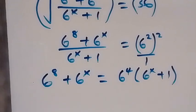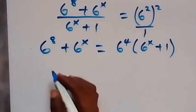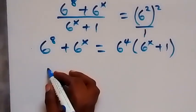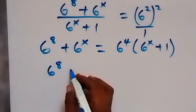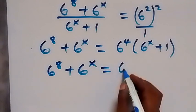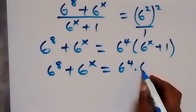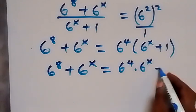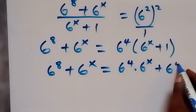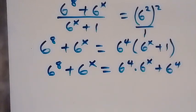Then from here we can open this bracket, and this gives us 6 raised to power 8 plus 6 raised to power x, equals 6 raised to power 4 times 6 raised to power x, plus 6 raised to power 4 times 1, which is 6 raised to power 4.